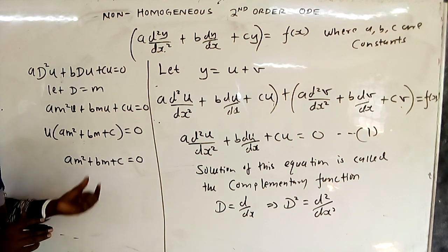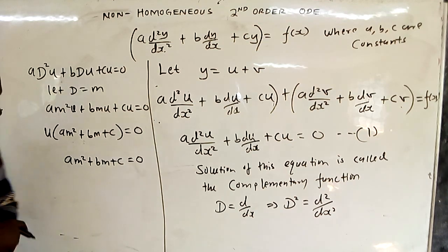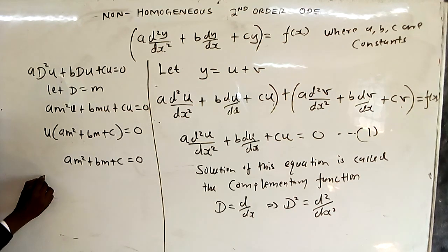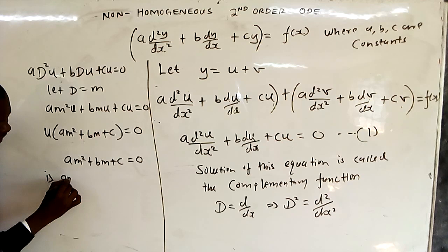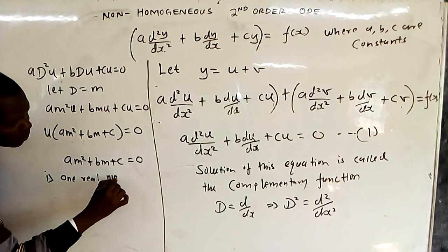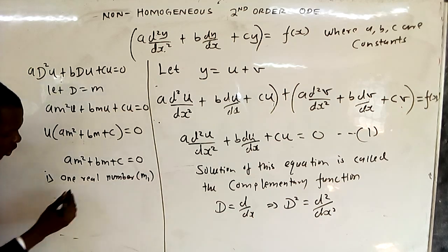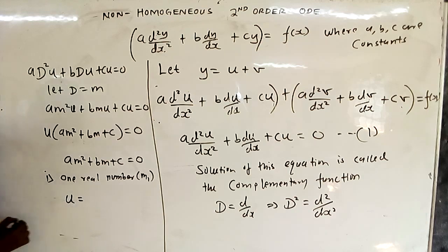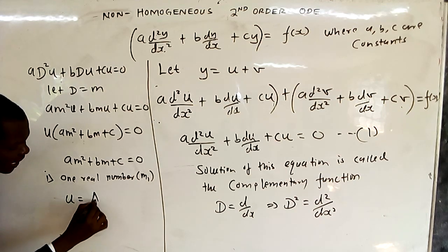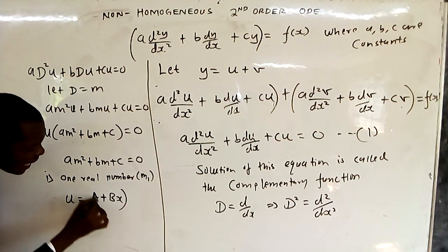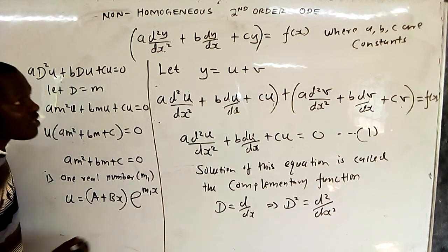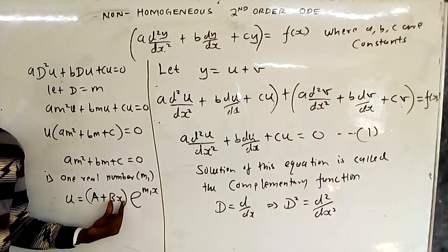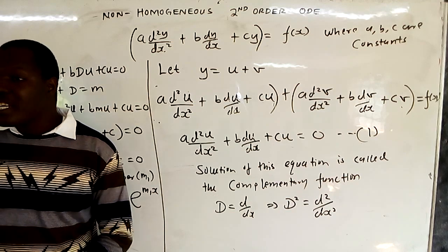Case 1: when M is one repeated real root M₁, the solution is u = (A + Bx)e^(M₁x). Case 2: when M gives two distinct real roots M₁ and M₂, the solution is u = Ae^(M₁x) + Be^(M₂x). This solution of u is the complementary function (CF).